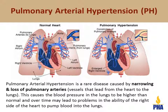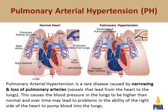Pulmonary arterial hypertension is a rare disease caused by narrowing and loss of the pulmonary arteries, or blood vessels that lead from the heart to the lungs. This causes the blood pressure in the lungs to be higher than normal and over time may lead to problems in the ability of the right side of the heart to pump blood into the lungs.